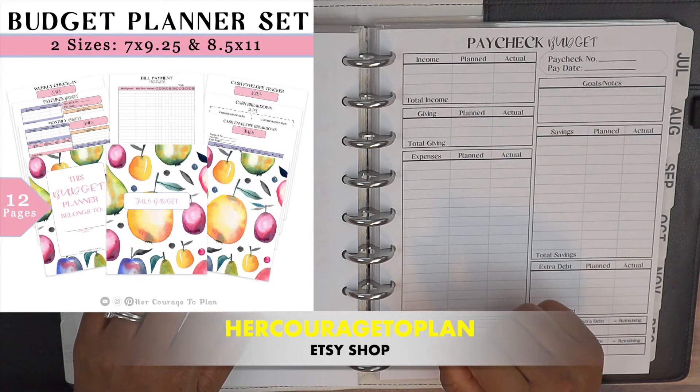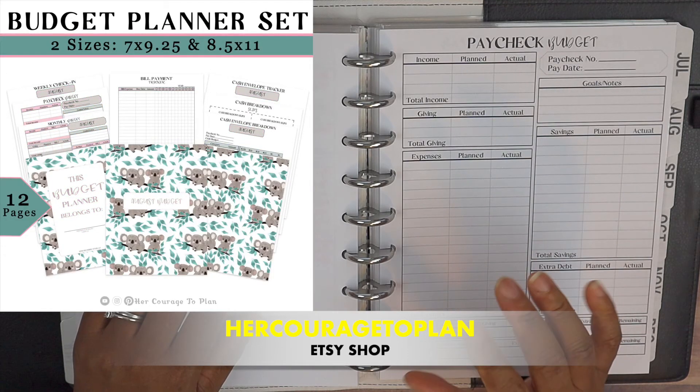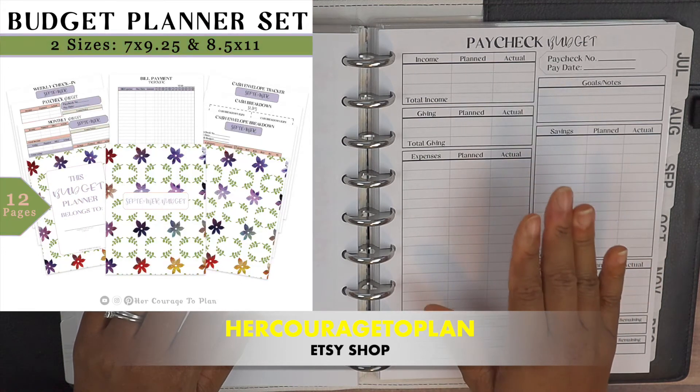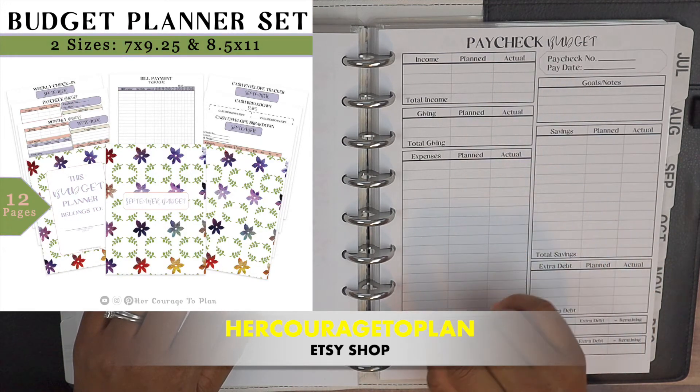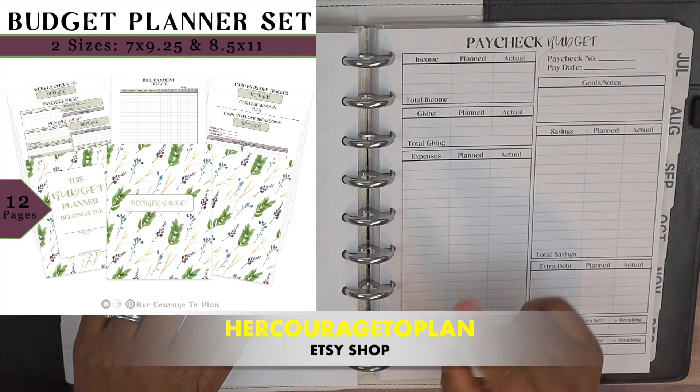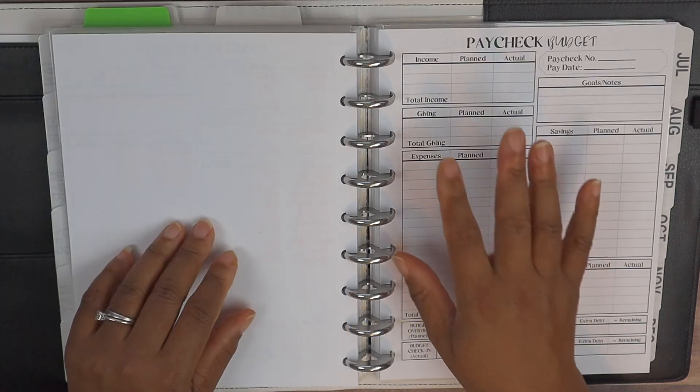Now if you do like that pop of color and you want to spruce up your planner for a particular month, I do have the June all the way through October planner sets in my Etsy shop as well if you want to check that out.